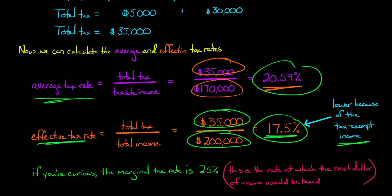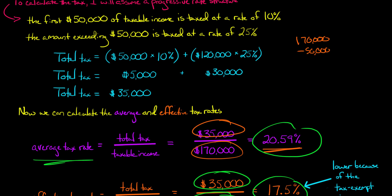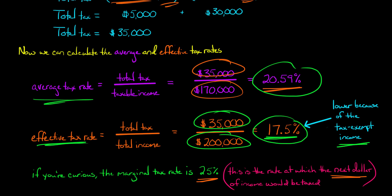This video was about the average tax rate versus the effective tax rate, but we also hear about the marginal tax rate. The marginal tax rate is the rate at which the next dollar of income would be taxed. In this example, since Tony's taxable income of $170,000 exceeds $50,000, any additional dollar is taxed at 25%. So Tony's marginal tax rate is 25%, his average tax rate is 20.59%, and his effective tax rate is 17.5%.